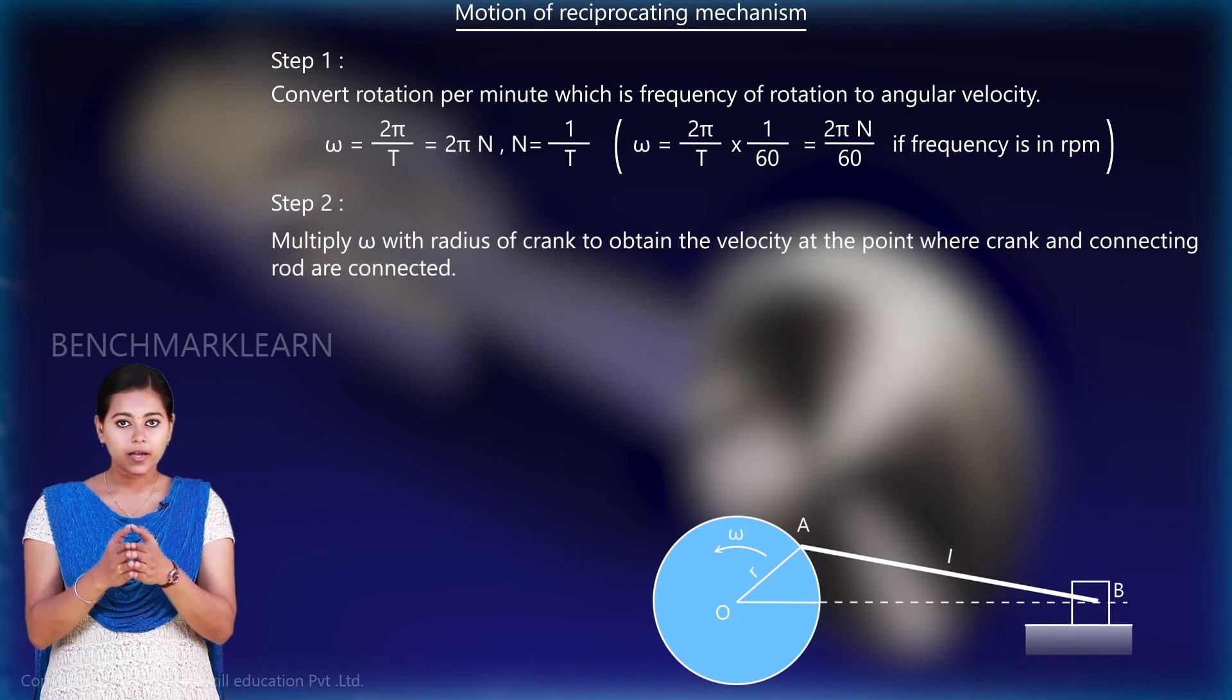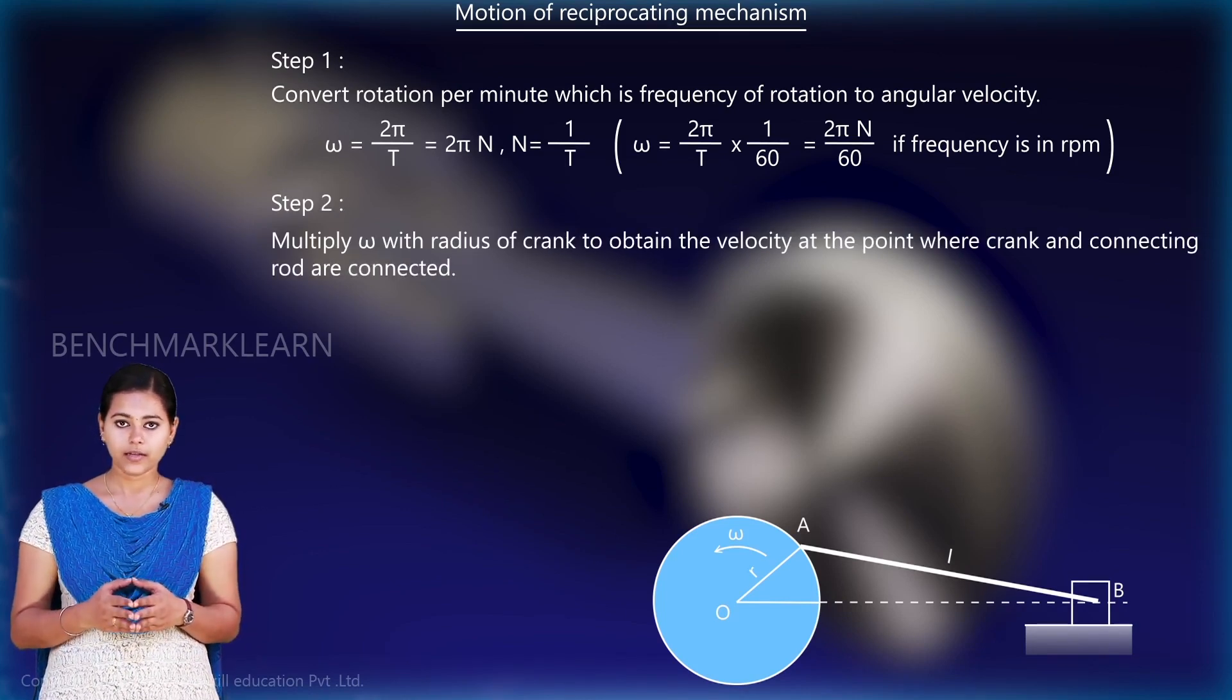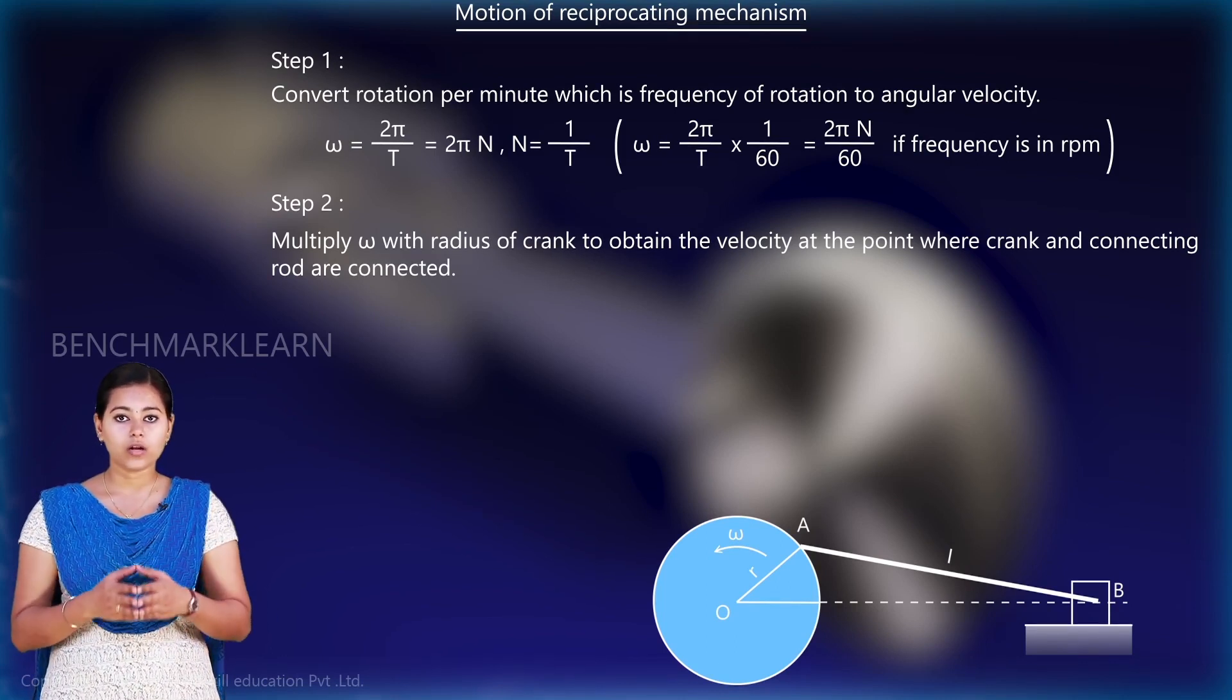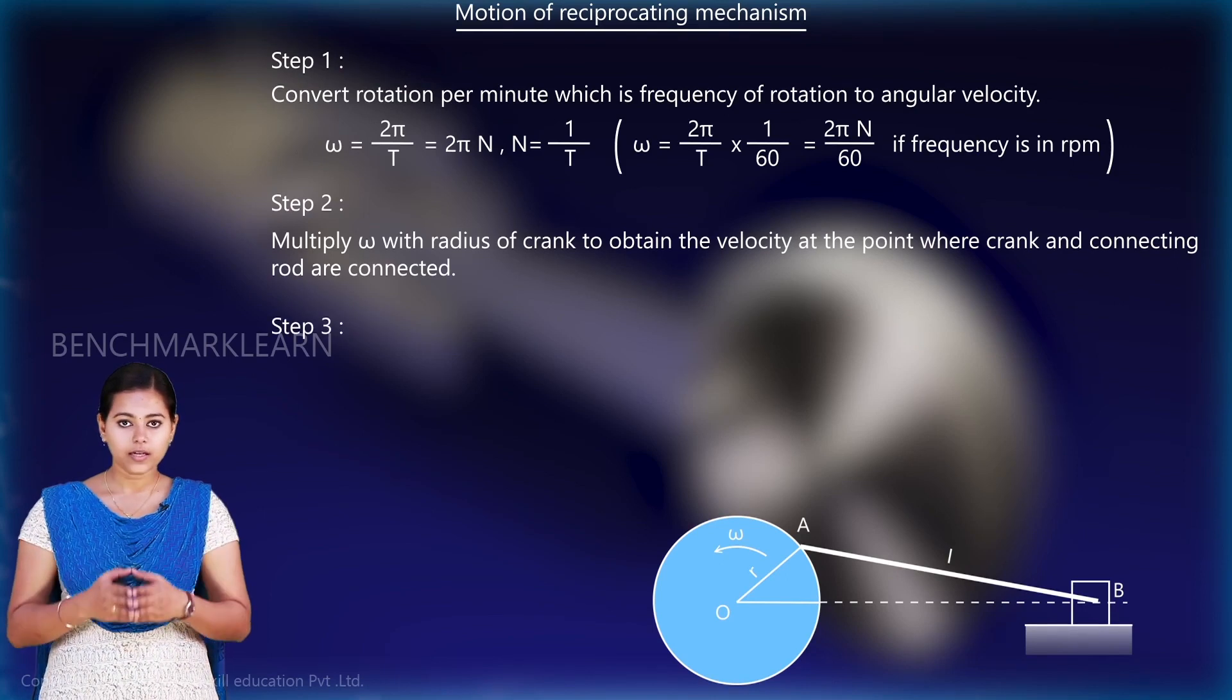In the second step, we multiply ω with the radius of the crank to obtain the velocity at the point where the crank and the connecting rod are connected.